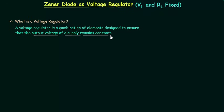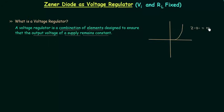I will use a Zener diode as a voltage regulator. I have already explained the working of the Zener diode in forward bias and reverse bias conditions. In forward bias, the Zener diode is similar to a normal diode. In reverse bias, the Zener diode is different from a normal diode because breakdown is achieved much earlier.